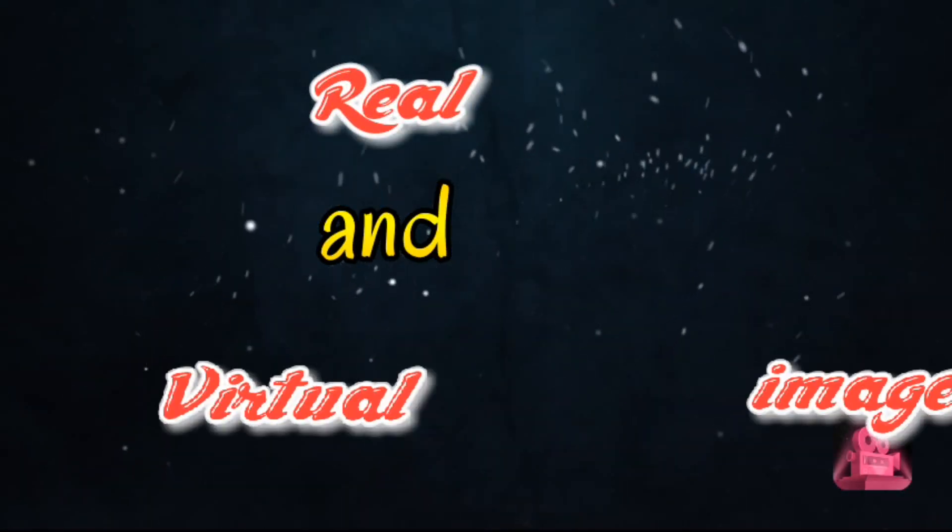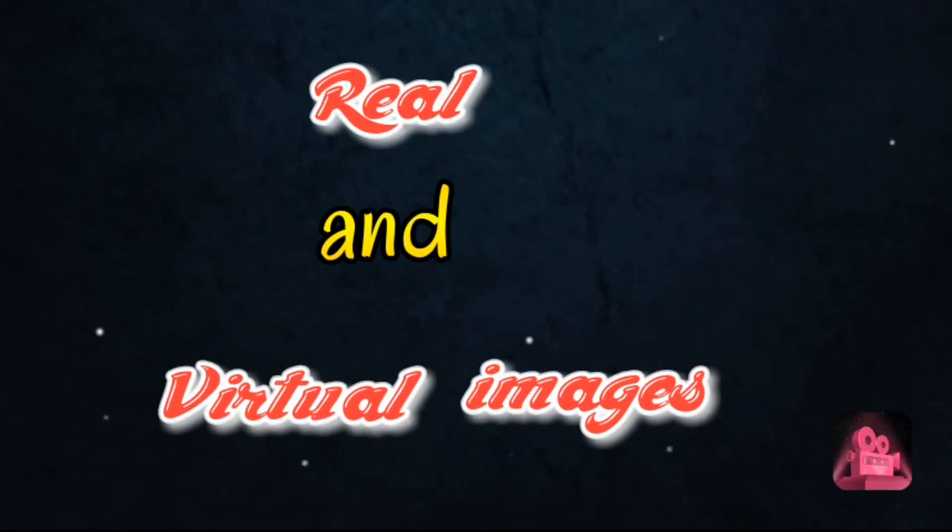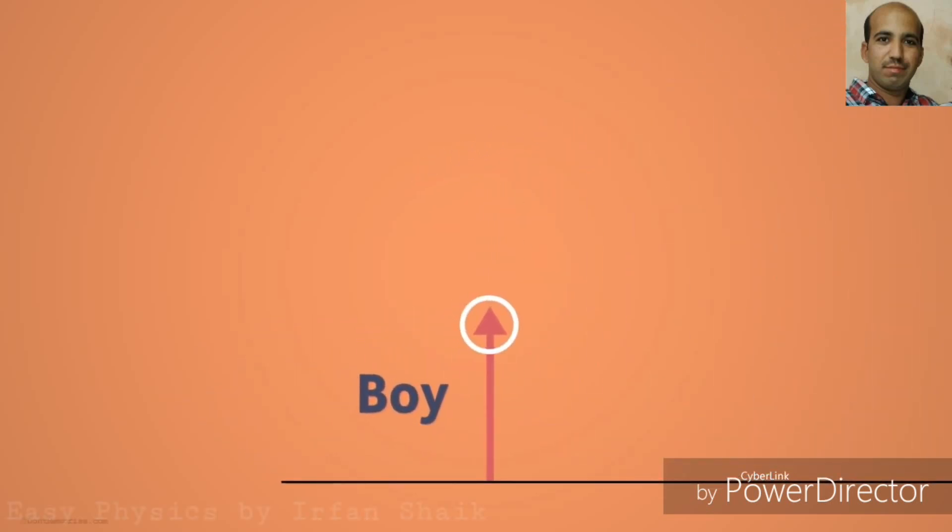Real and virtual images: let's represent the boy with an arrow pointing up. Here is a plane mirror. Let the top of the arrow be the top of the head of the boy.